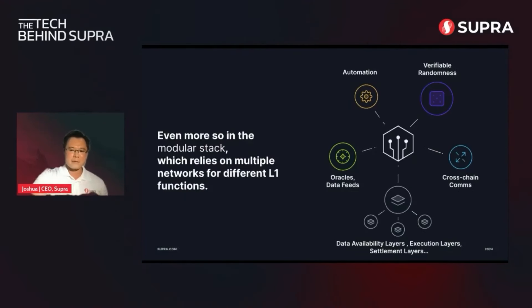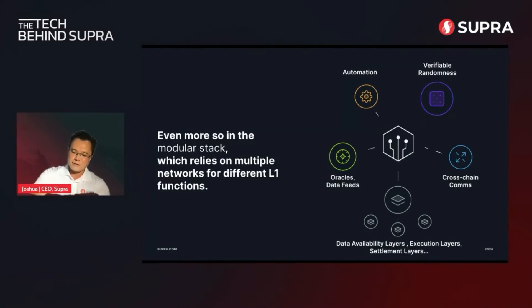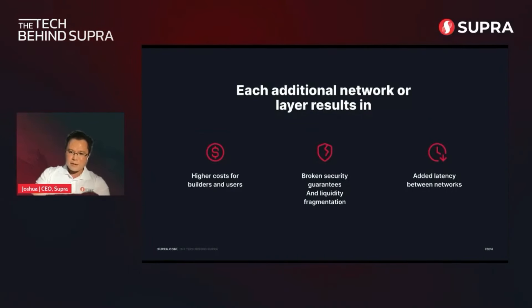This is not a good design. Extra layers for extra layers, extra tokens, extra systems. That is not a unified, integrated design. They try to sell you that this is integrated — this is not integrated. This is different networks. So if someone tells you that this is an integrated design, they don't know what they're talking about. Higher costs because you have to manage more coins, hire more developers, different frameworks, different protocols. Broken security guarantees and liquidity fragmentation across different layer twos and layer threes — it's getting out of hand. People are talking about layer four, it's getting too crazy.